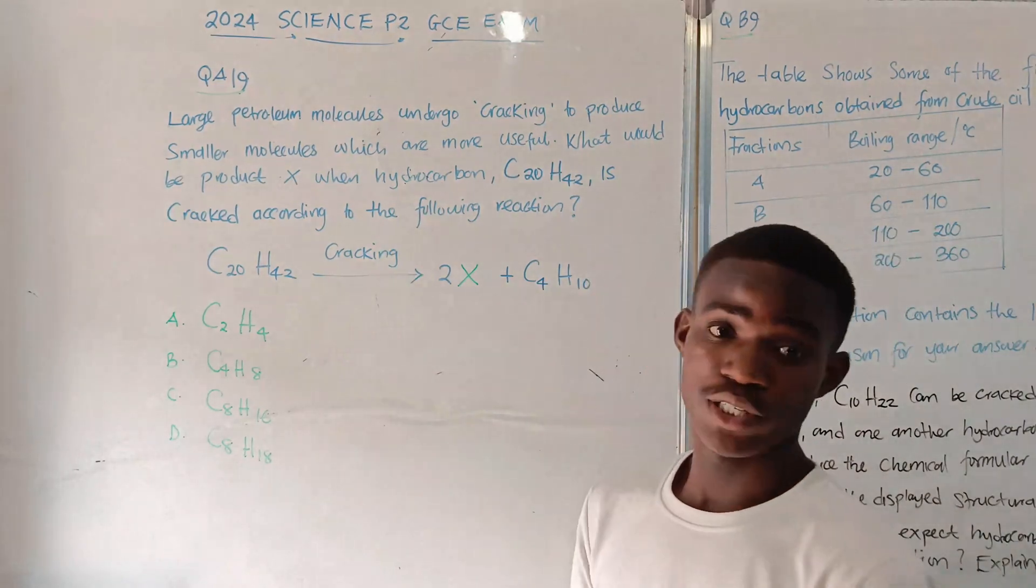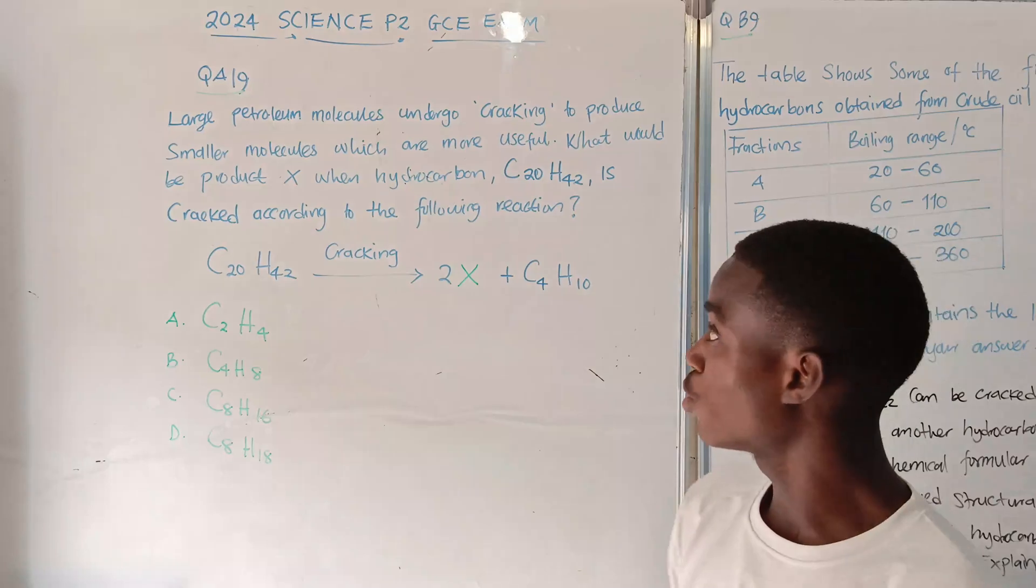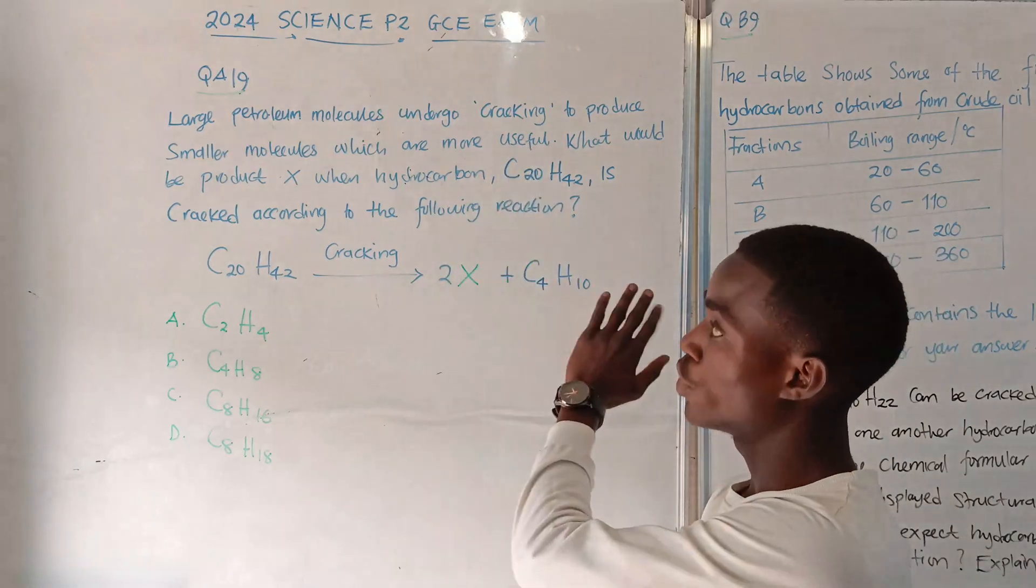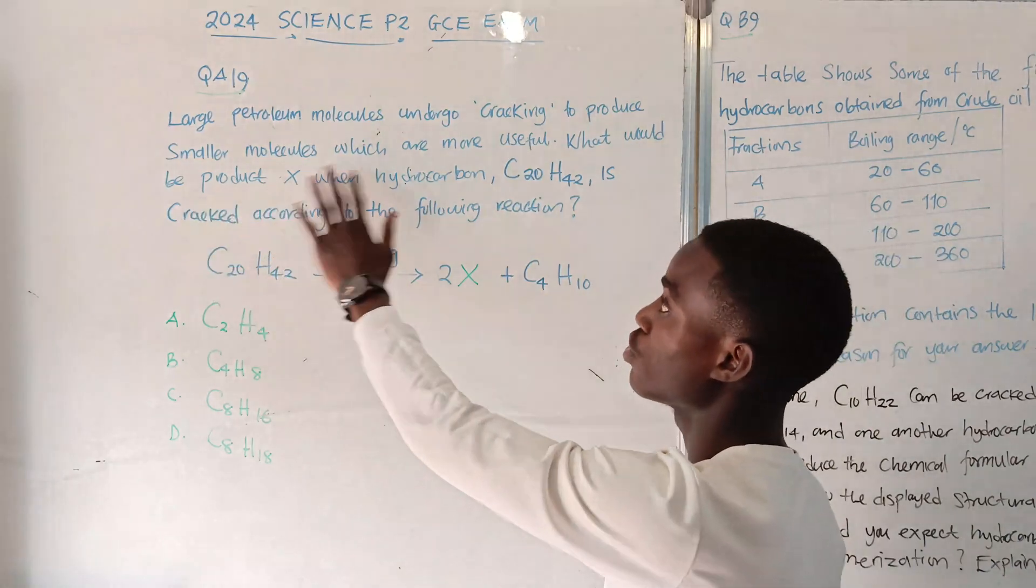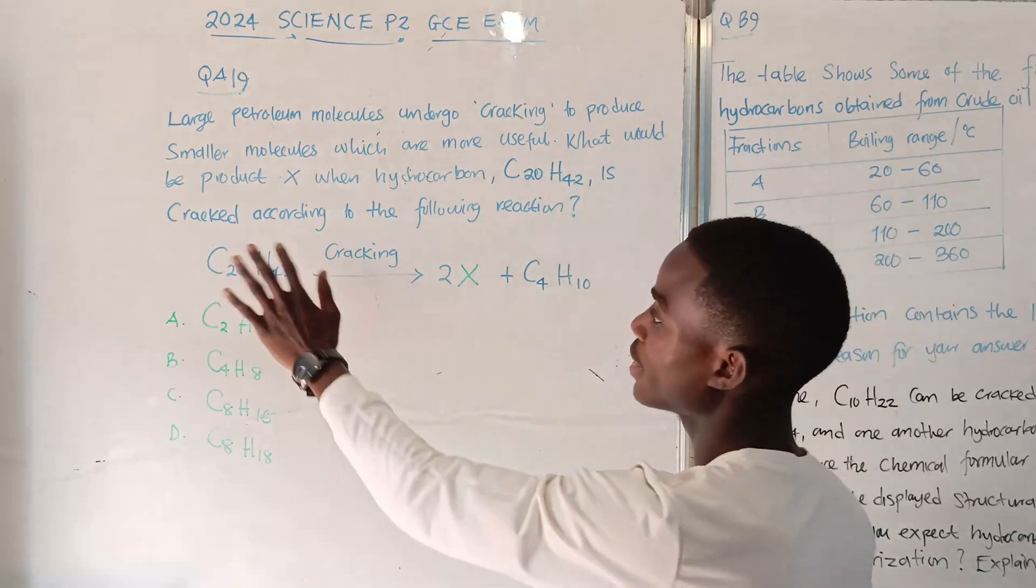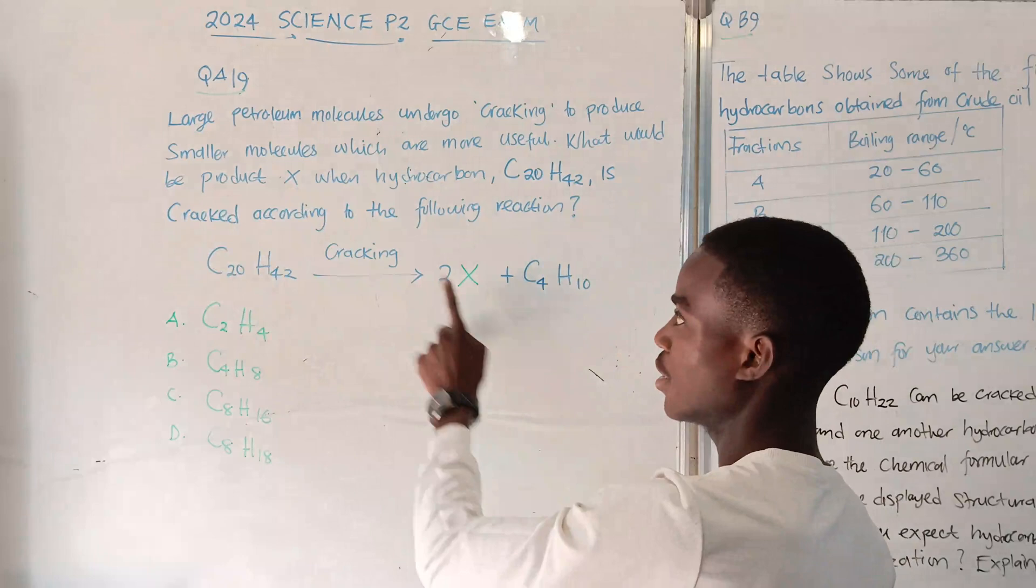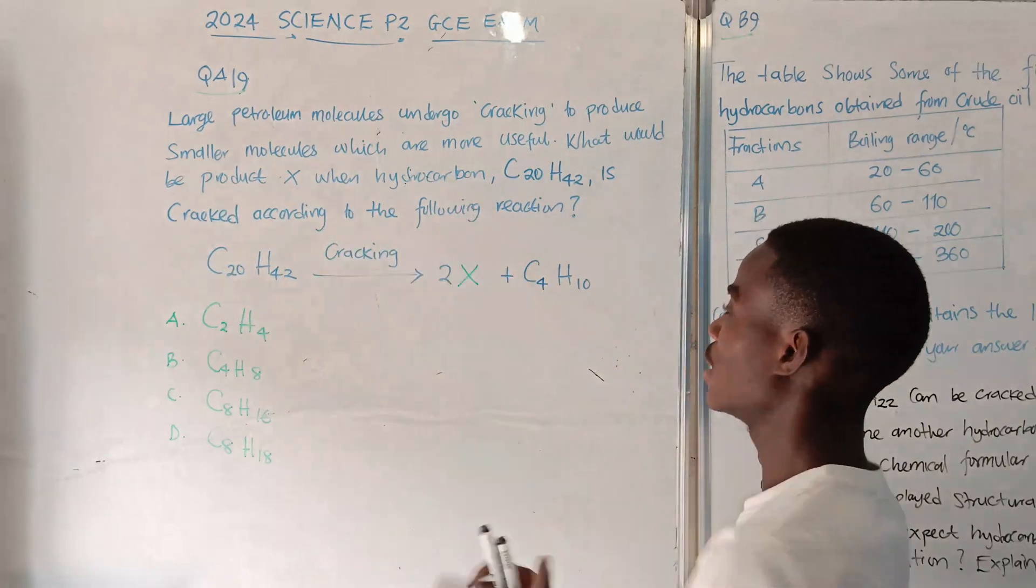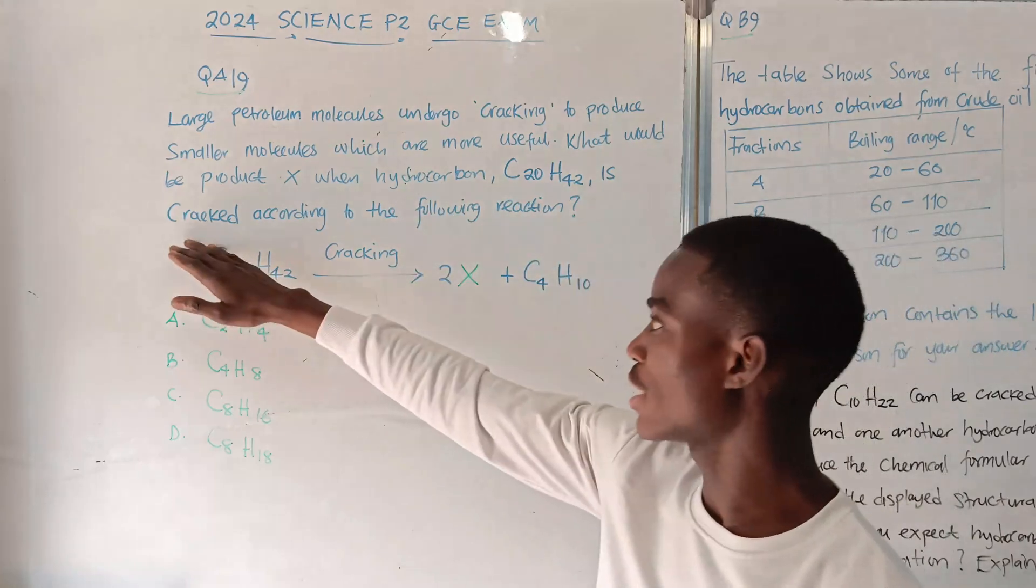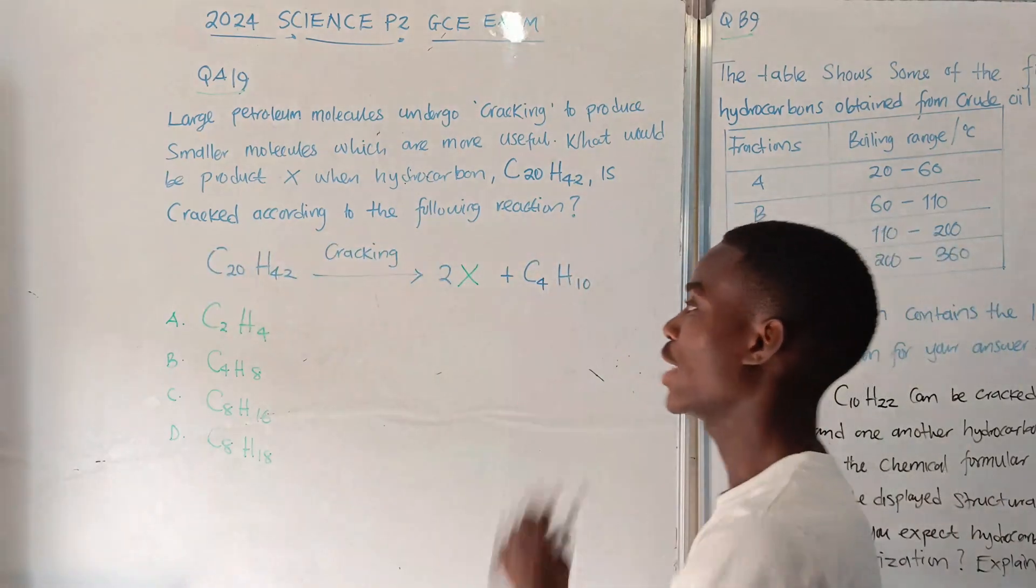The question reads: large petroleum molecules undergo cracking to produce smaller molecules which are more useful. What would be product X when hydrocarbon C20H42 is cracked according to the following reaction?